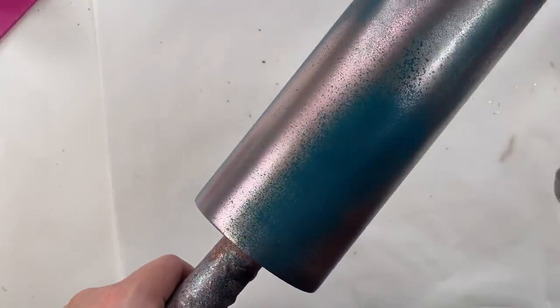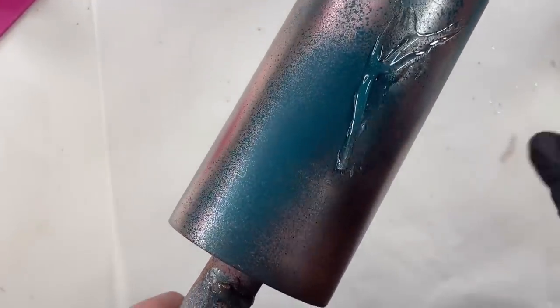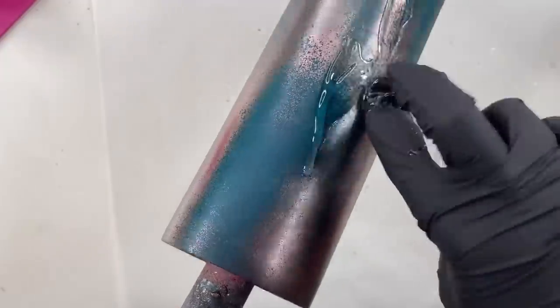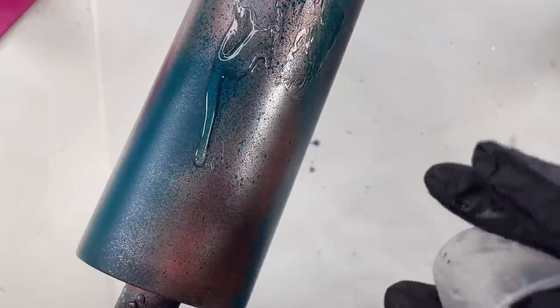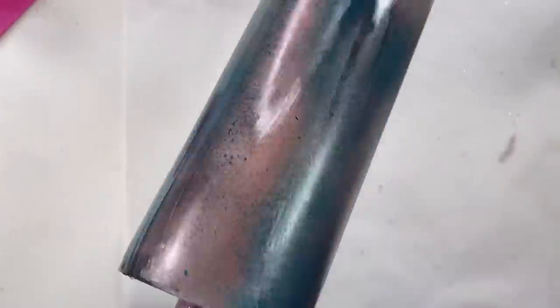And now that my paint's dry, I'm ready to apply my glitter. I'm going to be using epoxy as my adhesive for my glitter today. I've mixed five milliliters of epoxy and I'm going to apply less than one milliliter onto my cup. My cup should be pretty warm from putting it in front of the heater to dry the paint, so my epoxy should spread on pretty easily.